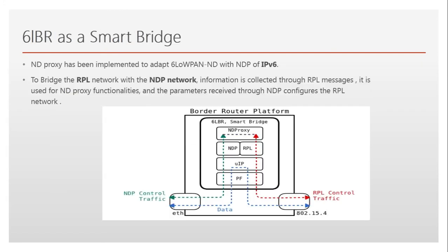So that is about Neighbor Discovery. What does the smart bridge do? There has to be some sort of adaptation mechanism that binds the 6LoWPAN Neighbor Discovery with the Neighbor Discovery Protocol of IPv6. All the information collected from the 6LoWPAN side through these RPL messages is used for the ND Proxy, or Neighbor Discovery Proxy. And all the parameters received from the IPv6 side or the Ethernet side are used to configure the RPL network or the 802.15.4 network. That was about the smart bridge.